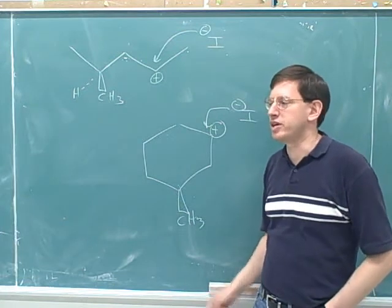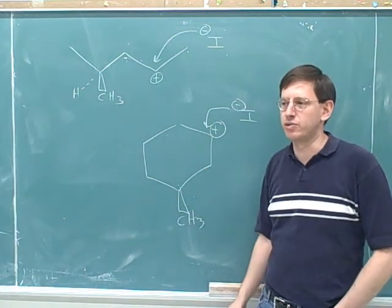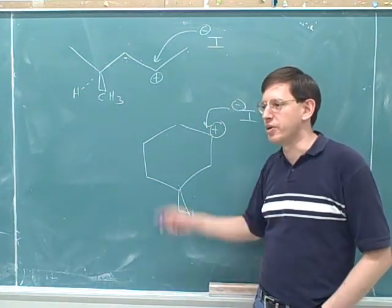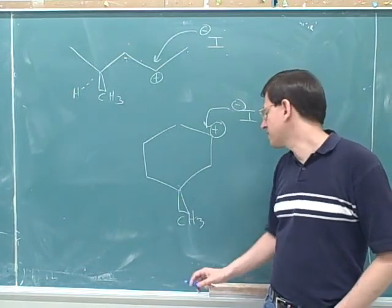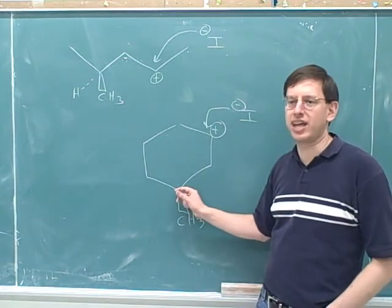The main time when a substituent can block just one face is when it's on a ring. The other situations would be any other situation where you have rigidity, so something can't constantly rotate. I can't think of another good example, though, off the top of my head. So the vast majority of the time, if one face is sterically hindered, that's because the steric hindrance is on a ring and it can't rotate.